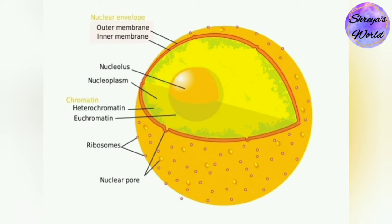Nuclear pores move through both the inner and outer membranes of the nuclear membrane and are composed of large complex proteins, which allow a few molecules to permeate the nuclear envelope. Each of the nuclear pores consists of 30 distinct proteins, which operate together to transform materials. Also, they link the inner and outer membrane.